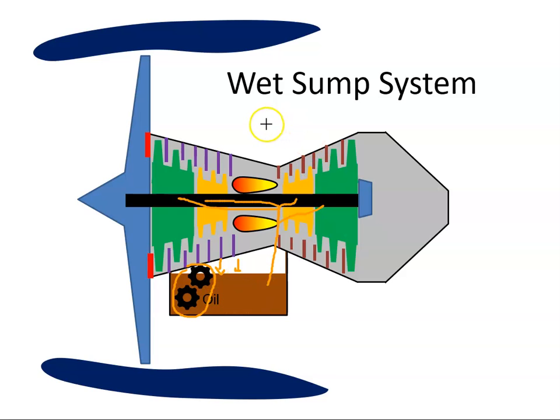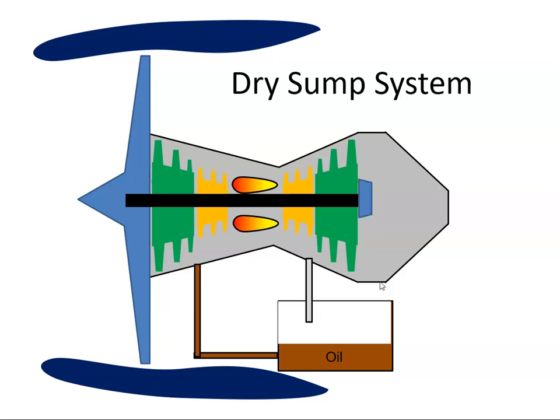So that's a wet sump system where the sump is an integral part of the engine. A dry sump system then is different in that the oil tank or oil reservoir is separate to the engine, and then the oil has to be transferred from the tank into the engine by pumps.